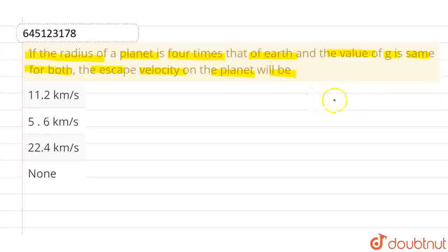So first thing, let us assume that this is Earth. We know that radius of Earth is Re, and its mass is Me, and the value of gravitational acceleration, which is g, is denoted by GMe by Re square. This is for Earth.